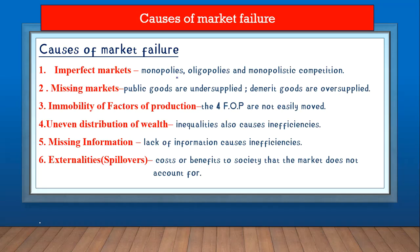There are six causes of market failure. Number one is imperfect markets — monopolies and monopolistic competition are inefficient and cause market failure. Number two is missing markets, such as the market for public goods, which are undersupplied because there is no profit in providing collective goods. Number three is demerit goods — goods that are bad for society — which are oversupplied, also causing market failure.